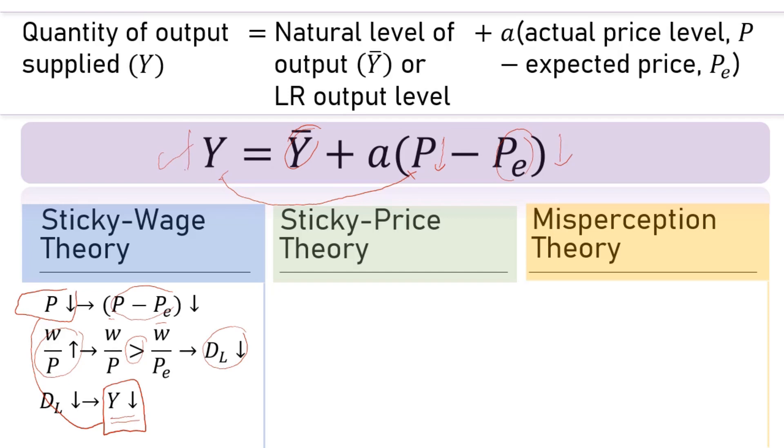According to the sticky price theory, the unexpected low price will affect firms that have set the price level in advance using Pe. They have set the price but cannot adjust it immediately in the short run because of high menu costs. So when actual price falls, their price Pe will still be high, making their products more expensive, thus declining their sales. With lower sales, firms respond with producing less output, which also means lower employment. Again, lower P means lower output and vice versa.